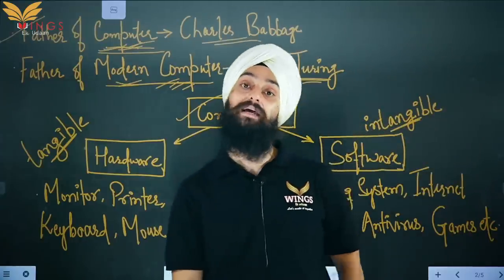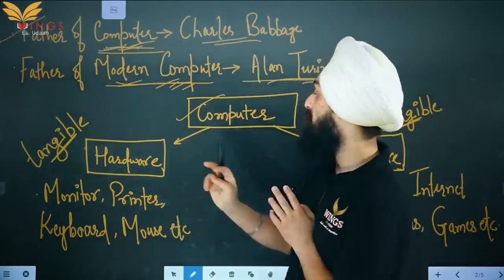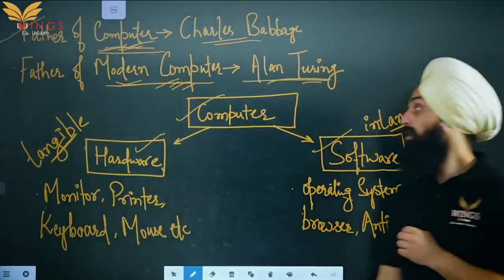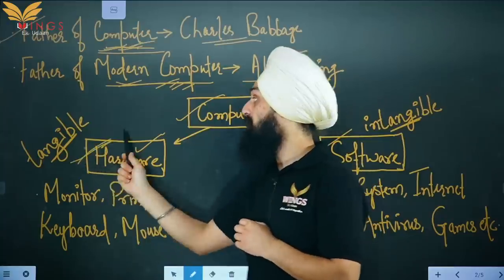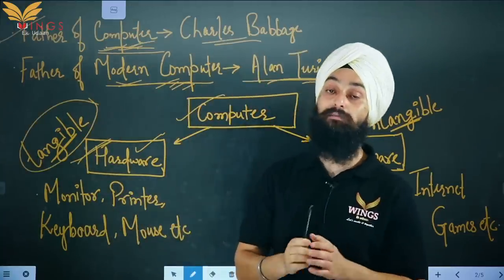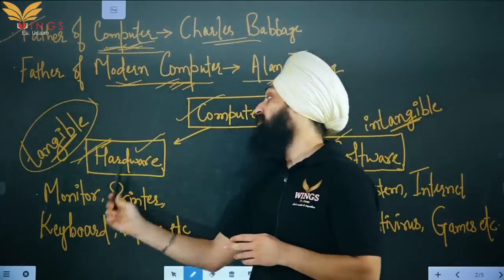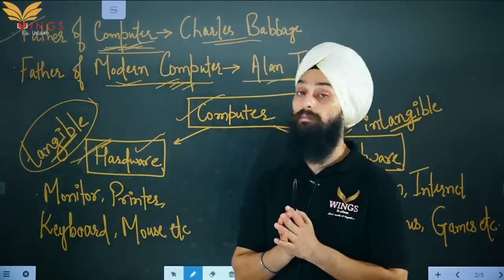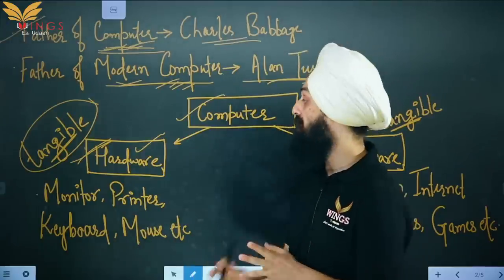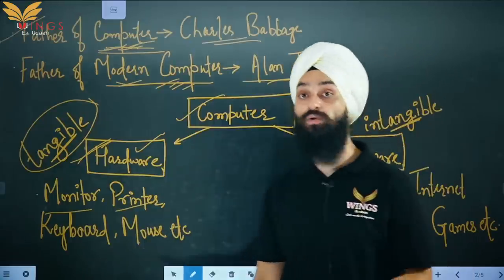A computer is mainly made up of two parts: hardware and software. Hardware means tangible parts — parts which we can touch. Examples include monitor, printer, keyboard, mouse, CPU, etc.